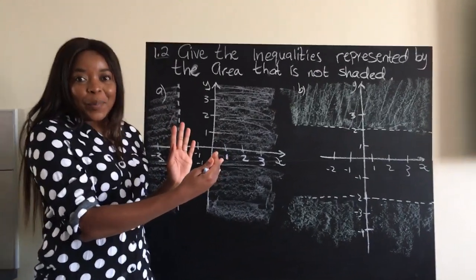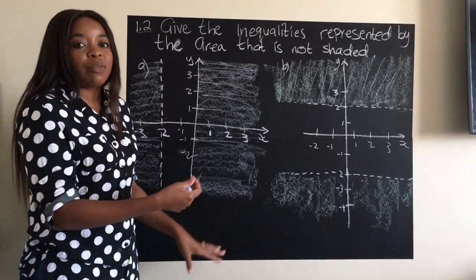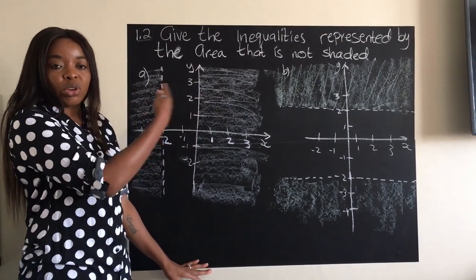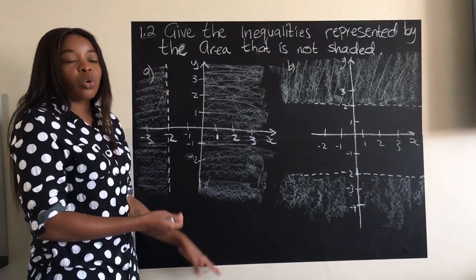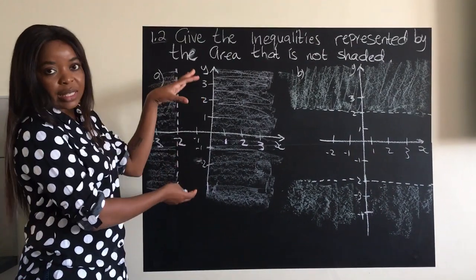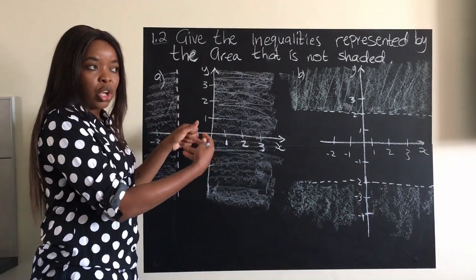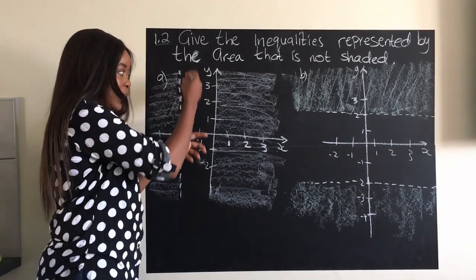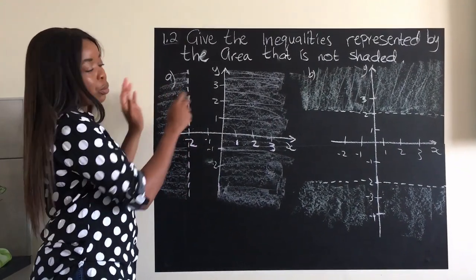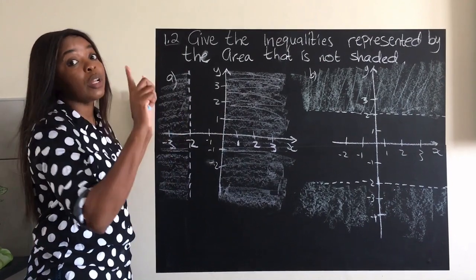In this example we're going to look at questions that ask us to give an inequality from a graph that is already shaded and drawn for us. We want to find the inequality representing the area that is not shaded — remember the unshaded area is our wanted region, so our inequality needs to make that unshaded area true.